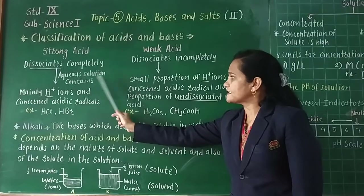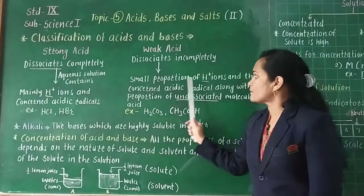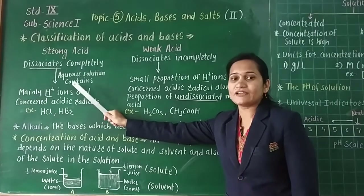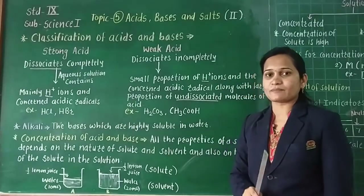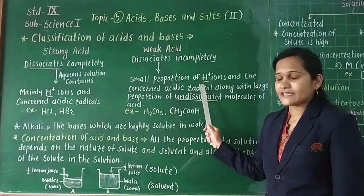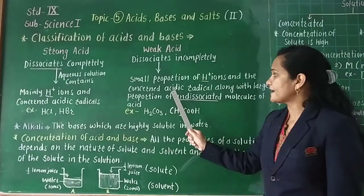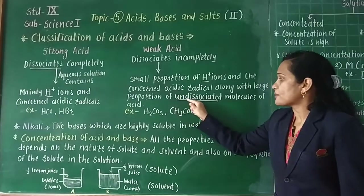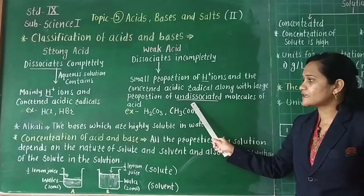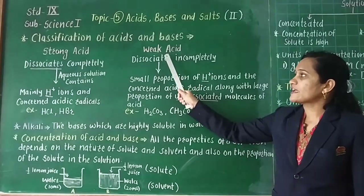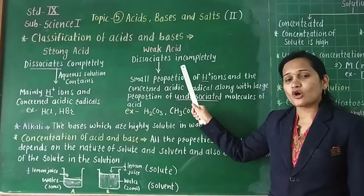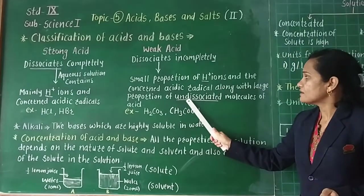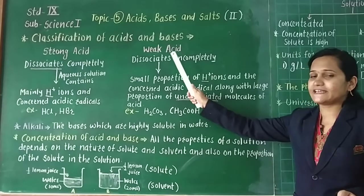The difference between strong acid and weak acid: in strong acid, mainly H+ ions are present. But in weak acid, H+ ions are present only in a small proportion, along with their concerned acidic radicals, and a large proportion of undissociated molecules — because weak acid dissociates incompletely and does not go into a free state completely.